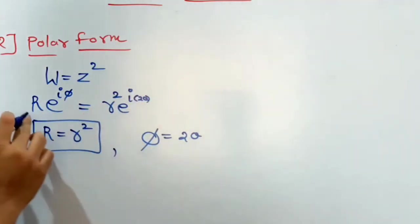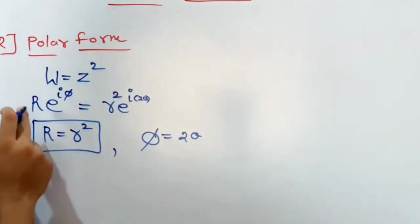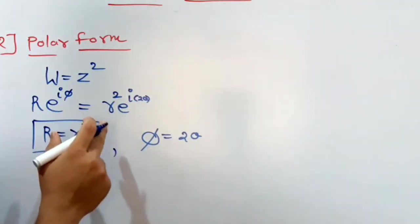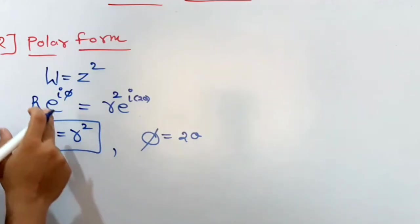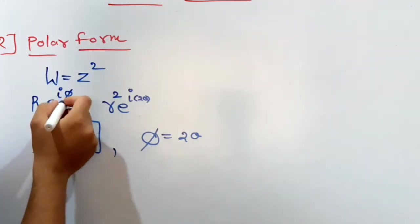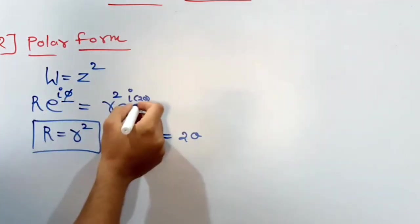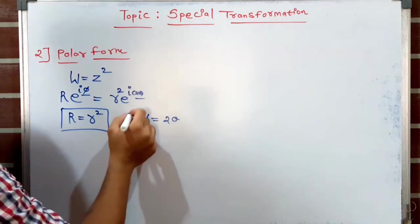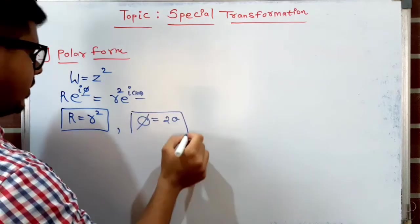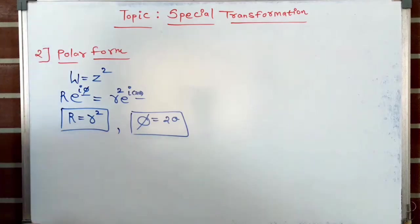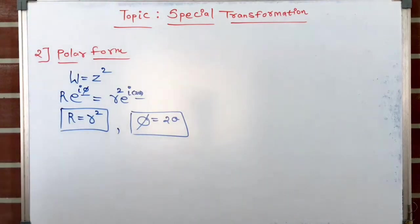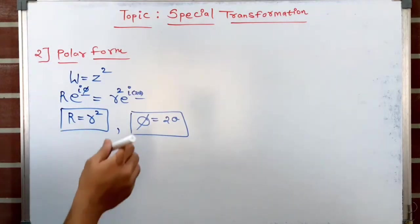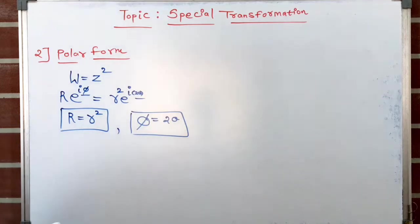From this equation we can see that R = r² and φ = 2θ. This is the polar form of the transformation, and it is used when the equation of a circle is given. Now we will solve some problems related to the w = z² transformation.